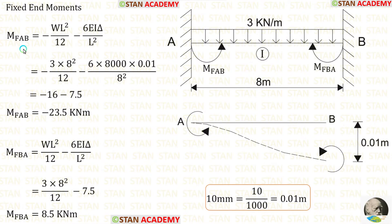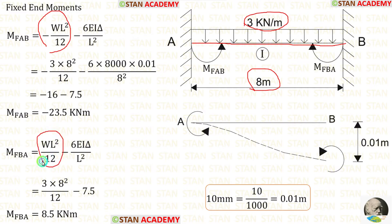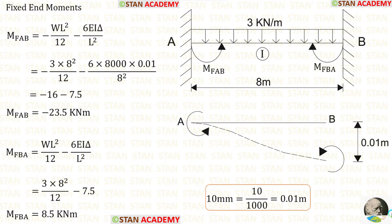Now let us find the fixed end moments. First, in span AB, we have UDL of 3 kN/m acting for the full span. The formula for fixed end moments due to UDL are −WL²/12 and +WL²/12. Since support B is sinking by 10 mm, we also have to find the fixed end moments due to sinking. The formula for fixed end moment due to sinking is 6EIδ/L².